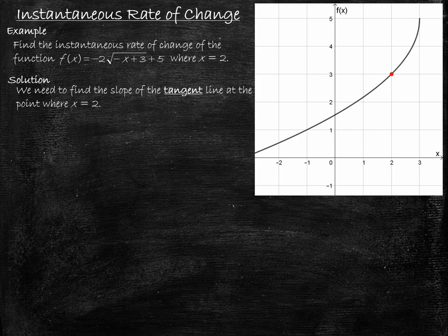The answer to both of those questions is: you use a tangent line. A tangent line is a straight line that intersects the graph at a single point, known as the point of tangency. The tangent line doesn't slice through the graph — it kind of rests against the graph, like this.